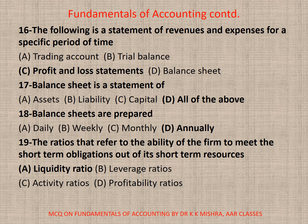Question 19: The ratios that refer to the ability of the firm to meet the short-term obligations out of its short-term resources — A. Liquidity Ratio, B. Leverage Ratio, C. Activity Ratio, D. Profitability Ratio. Correct option is A. Liquidity Ratio.